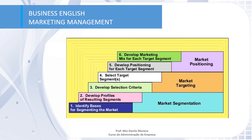The full STP strategy starts from marketing segmentation. First, we identify the basis for segmenting the market. After, we develop profiles of resulting segments. Next, we move to market targeting by developing selection criteria and selecting the target segments. Then we move to market positioning, developing positioning for each target segment, and finally developing a marketing mix for each target segment. I'm going to explain this to you like a pizza.